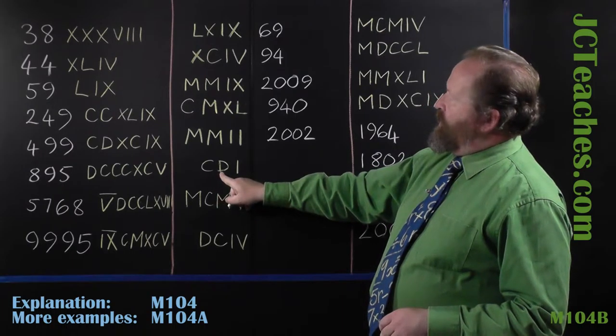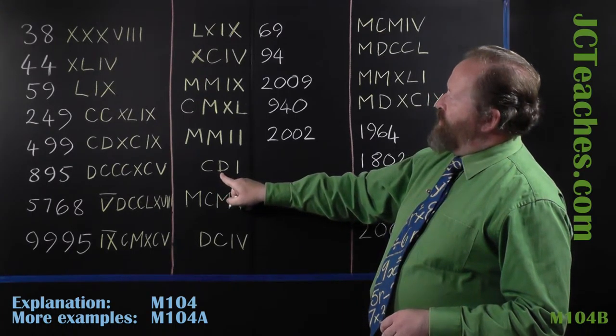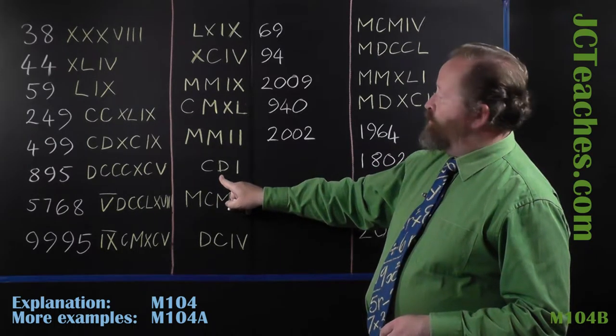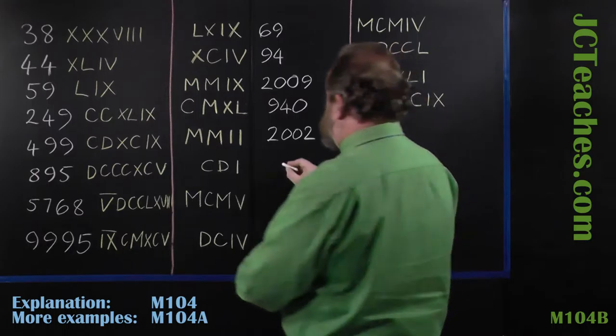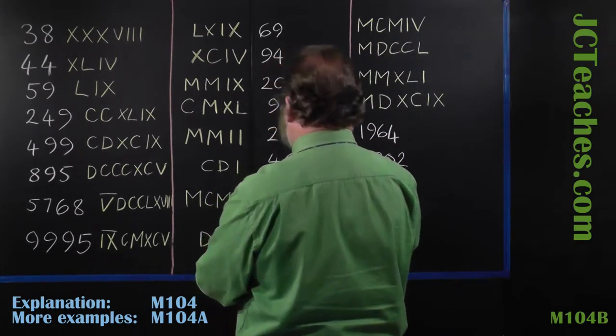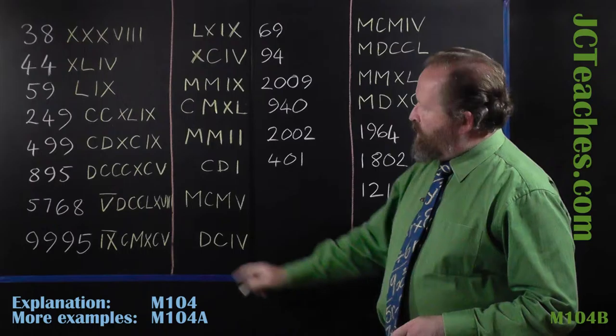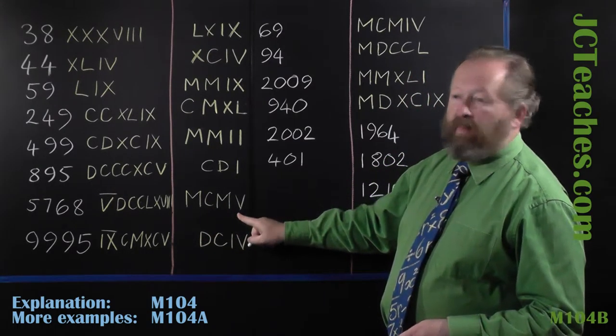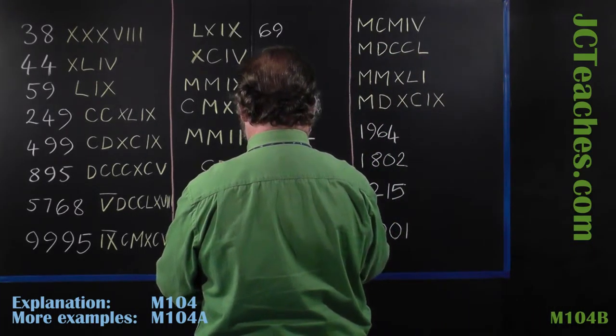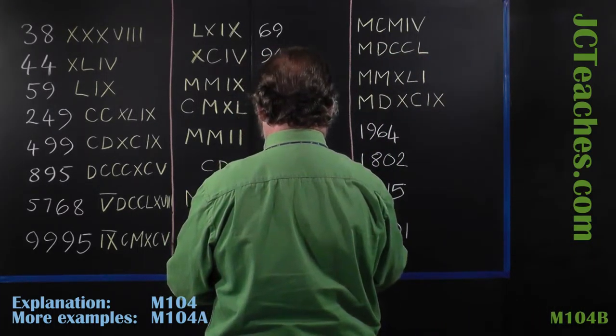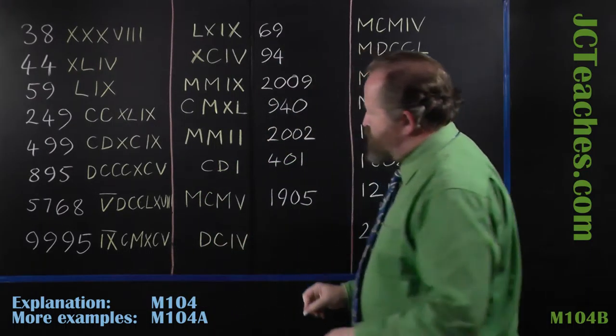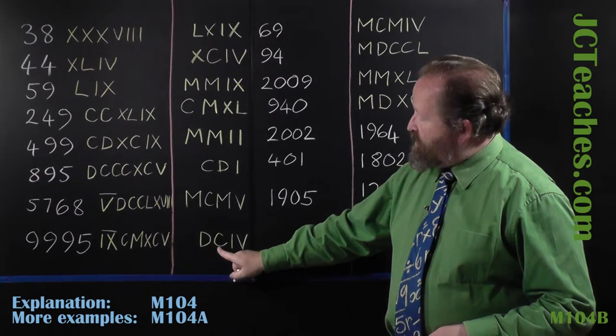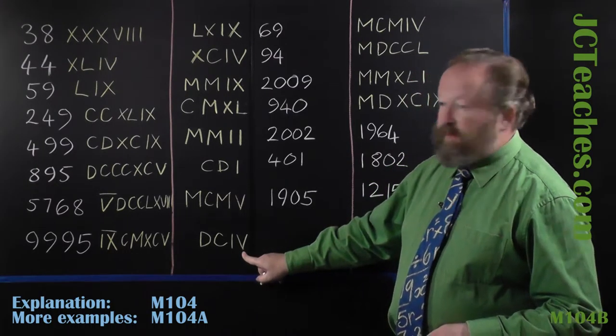This one, D is 500, C is 100, so that's 400 and 1, 401. One D is 500, so 500, 600, and 4.